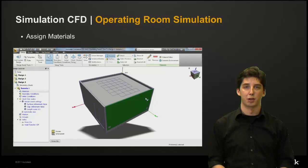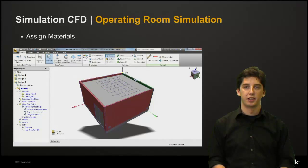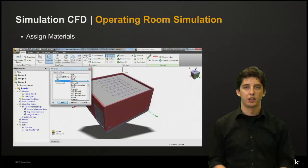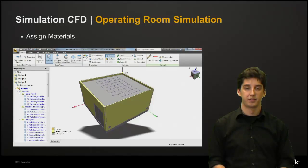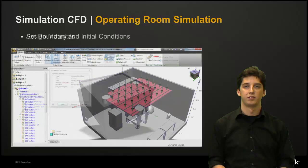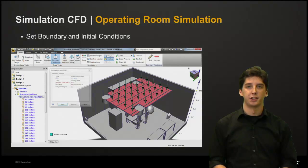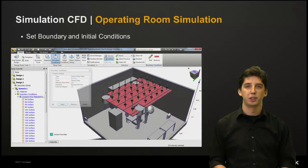Now we can go back to assigning materials to our parts. Select the materials option in the setup tab and here we can select all of our walls, click edit, and then assign our material settings. We also want to make sure that we assign the interior volume as air. Next we want to set boundary and initial conditions. These conditions are things such as initial temperatures, total heat generation, pressures, and volume flow rates.